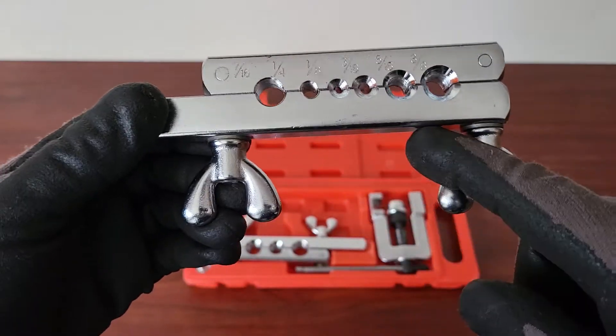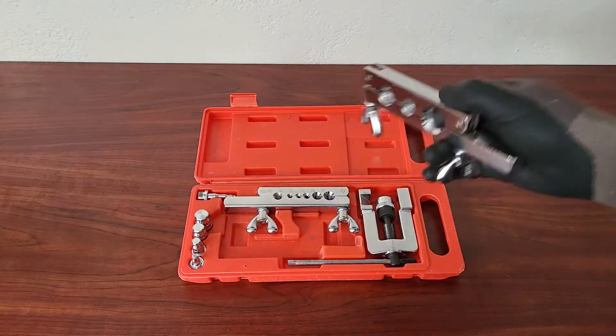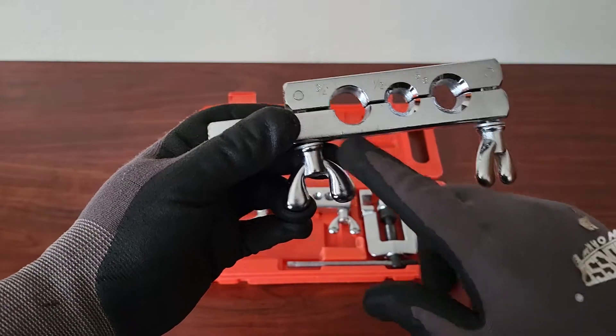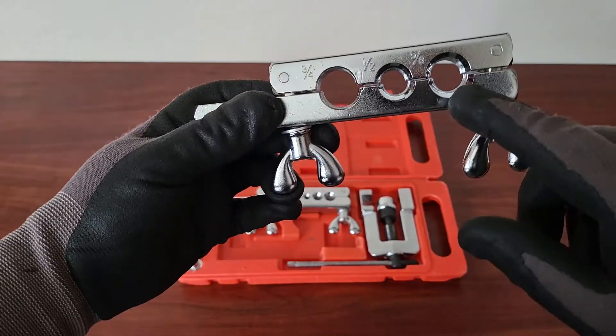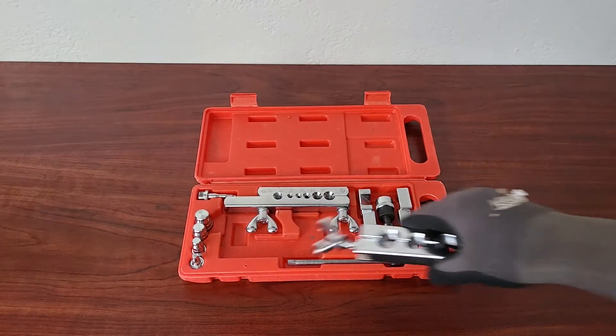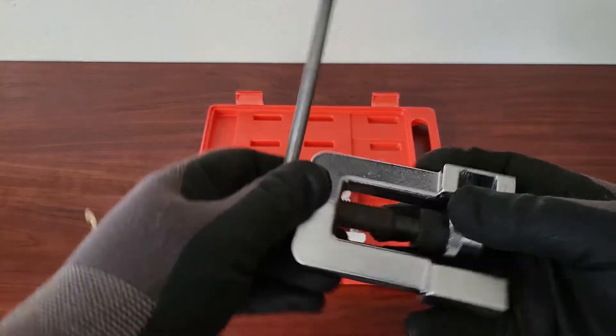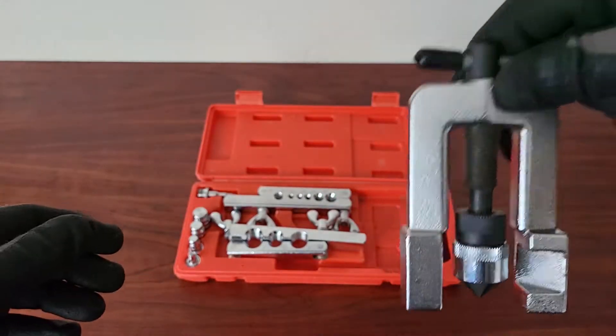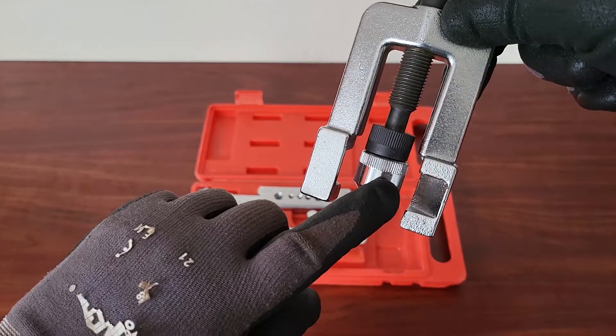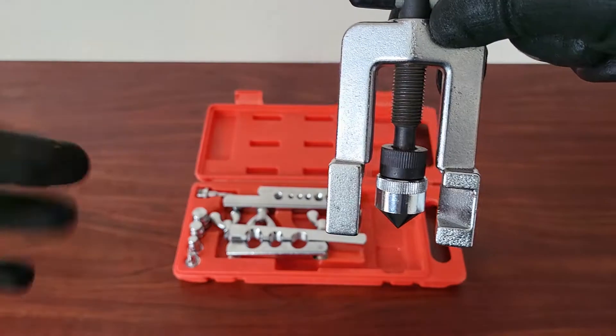So smaller pipe sizes on this one, and then your bigger pipe sizes over here. You've got your three-quarter, half inch, and that's five-eighths.